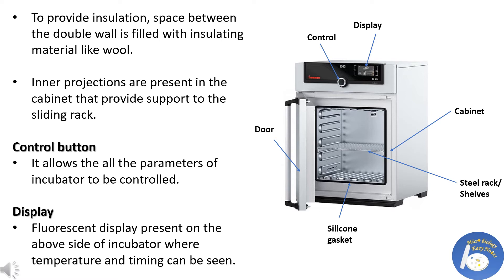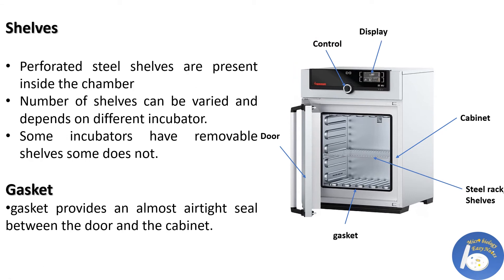To provide insulation, the space between the double walls is filled with insulating material like wool. Inner projections are present in the cabinet that provide support to the sliding racks or shelves. The control button allows all the parameters of the incubator to be controlled. The fluorescent display is present on the top or side of the incubator where temperature and timing can be monitored. Perforated steel shelves are present inside the chamber where the material is kept; the perforations allow movement of hot air throughout the inside. The number of shelves can vary depending on the incubator — some have removable shelves and some do not.